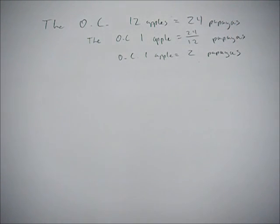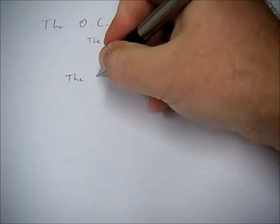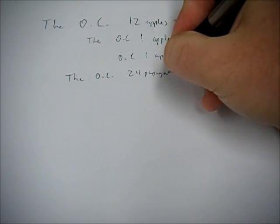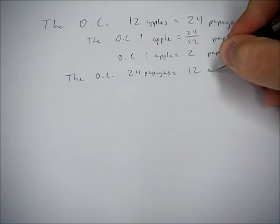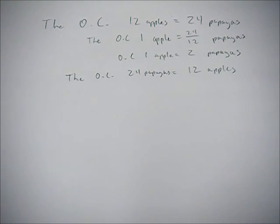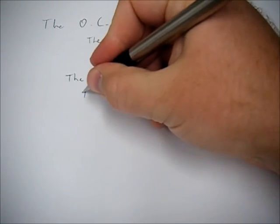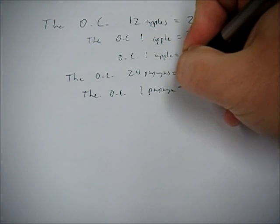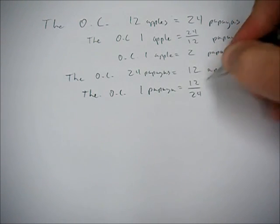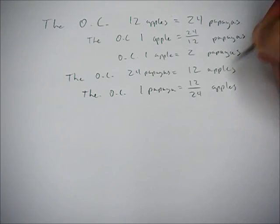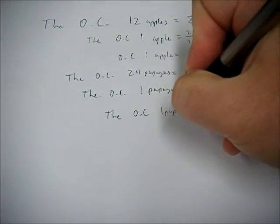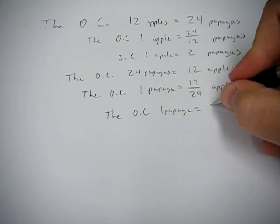Then you just use our trick from before. Let's do it the other way: the OC of 24 papayas is 12 apples. Divide both sides by that 24 to get the OC of one papaya equals 12 over 24 apples, or the opportunity cost of one papaya is half of an apple.